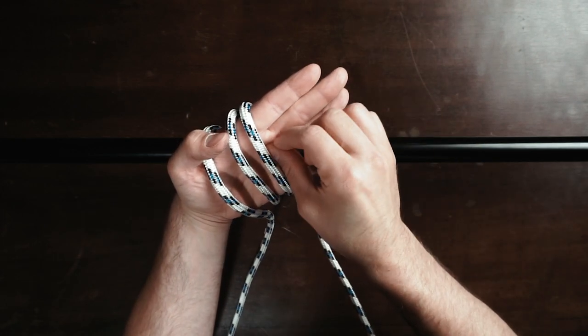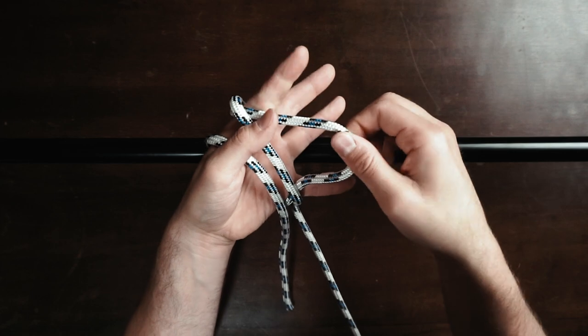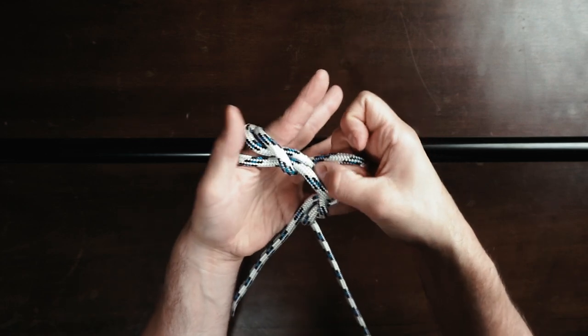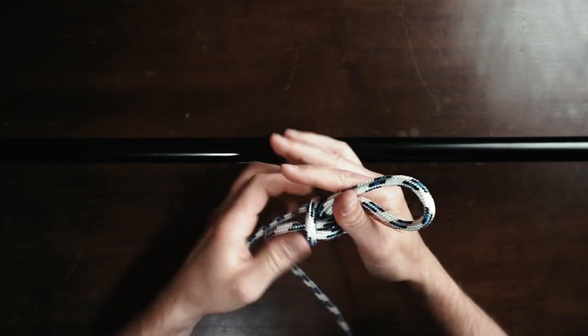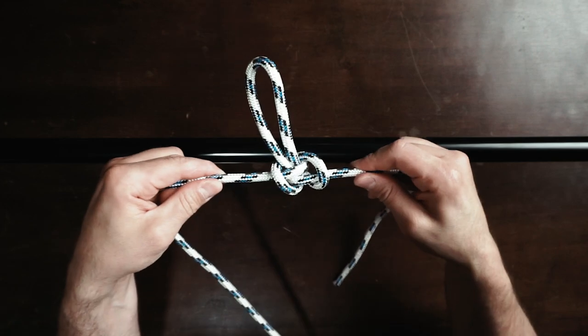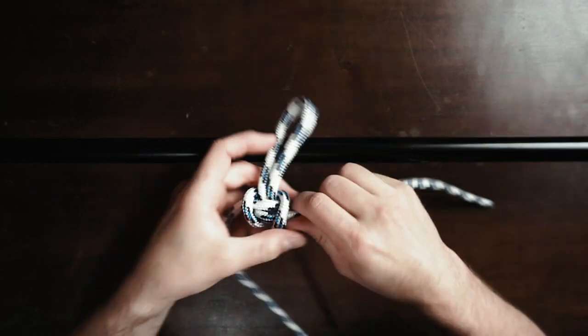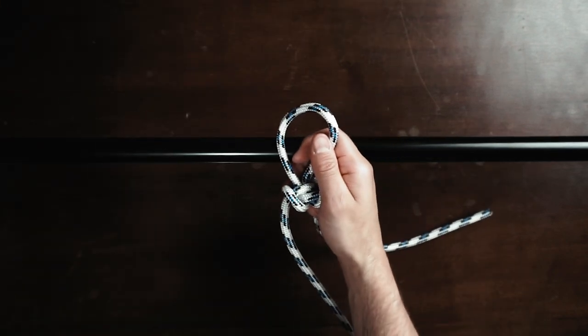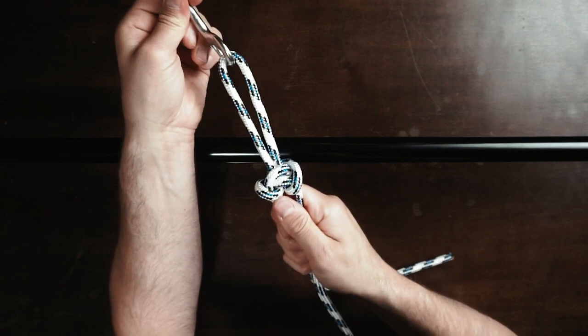Now grab the middle one from underneath, pull it a bit, bring it back and feed it under again, like this. Now you can pull everything, make it tight. And now you really have a nice loop in the middle of the rope that does not slide and that does not constrict where you can clip any stages or anything to.